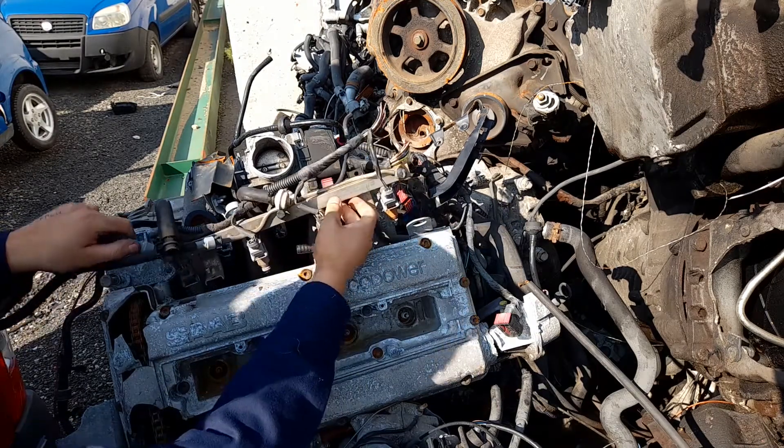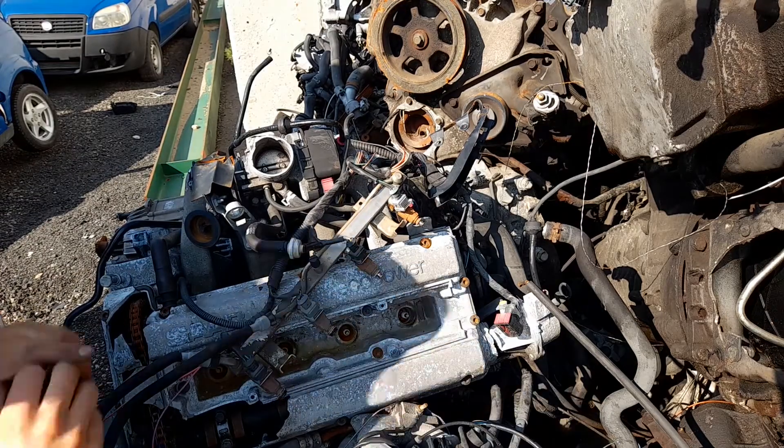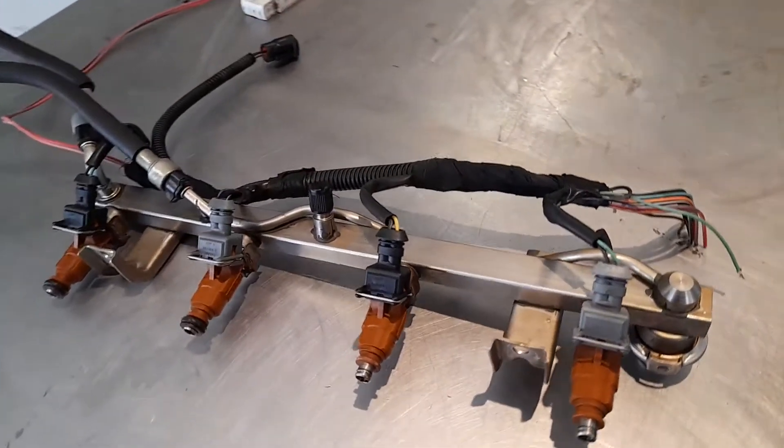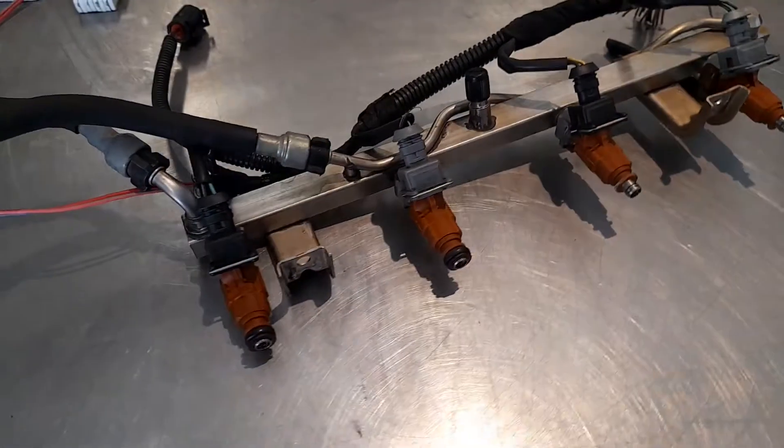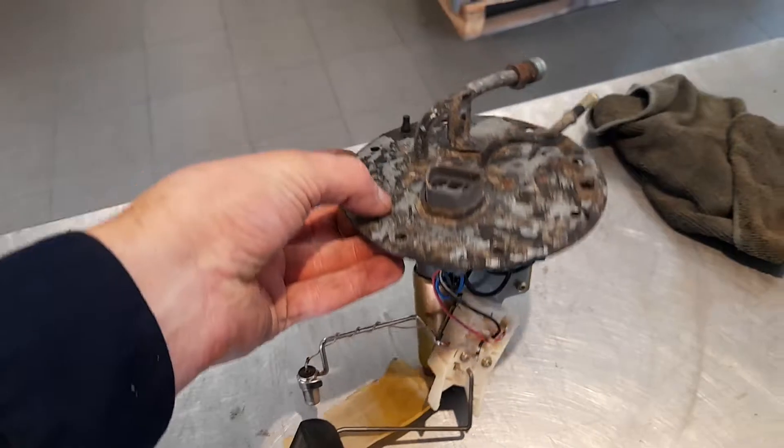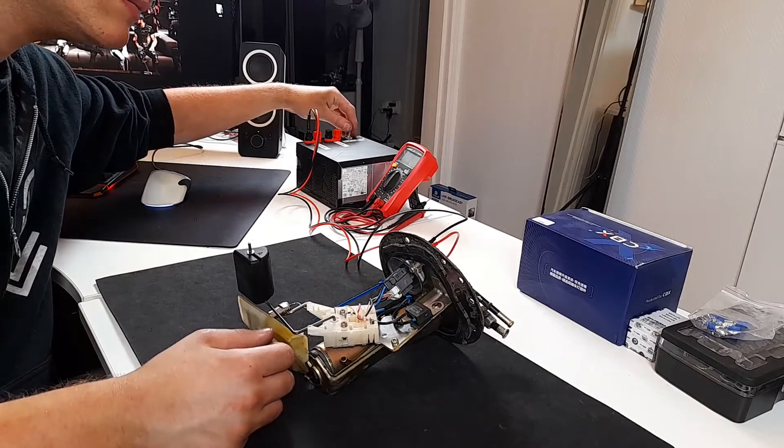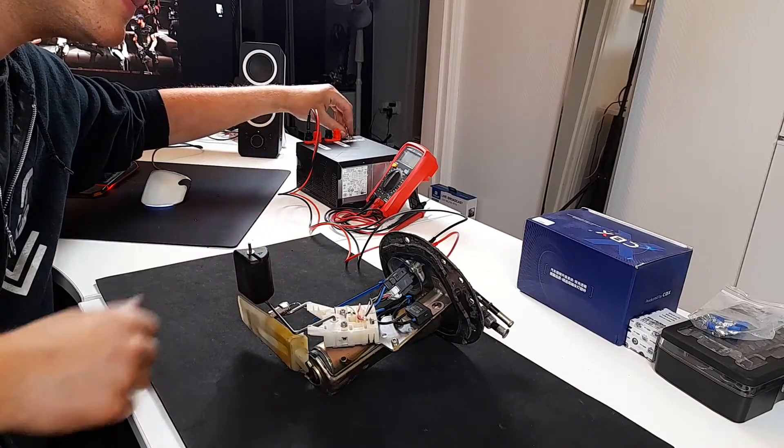All right we have a fuel rail. Let's give it a clean so it's nice and tidy to work with later. I also found a fuel pump with a built-in filter. Exactly what we need. Let's head back home, test the fuel pump and start figuring out the wiring.